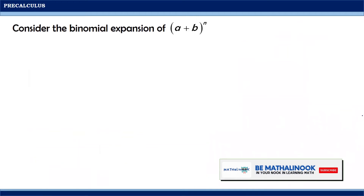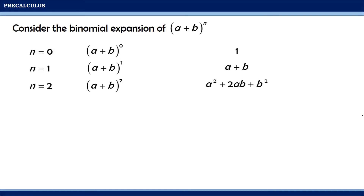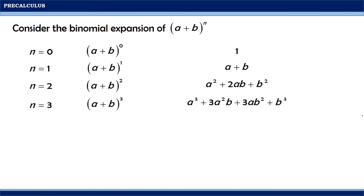Consider the binomial expansion of (a + b) raised to n. If n is equal to 0, then (a + b)^0 = 1. If n is equal to 1, then (a + b)^1 = a + b. When n is equal to 2, (a + b)^2 = a² + 2ab + b². Moreover, if n is equal to 3, then (a + b)^3 = a³ + 3a²b + 3ab² + b³.